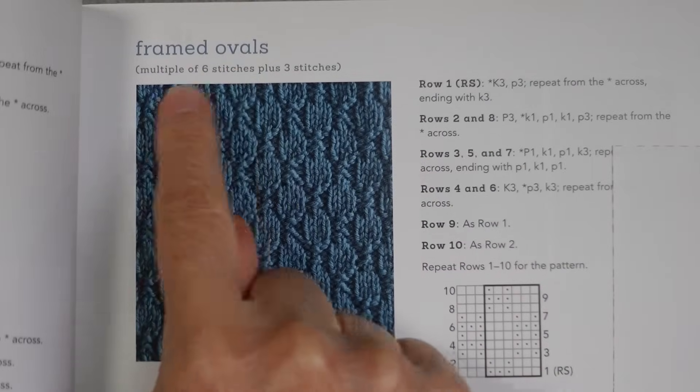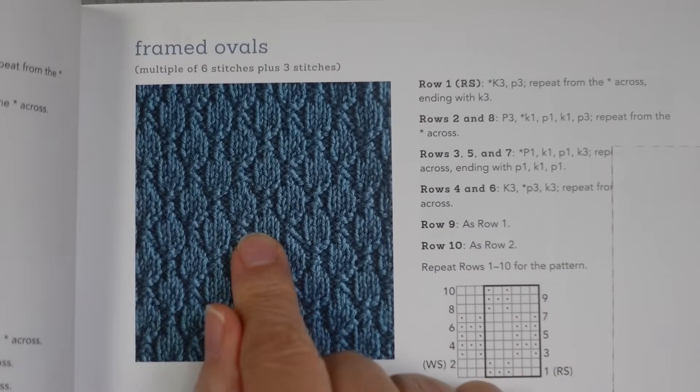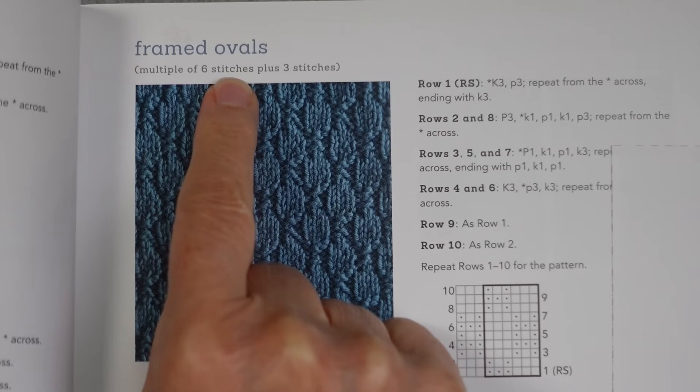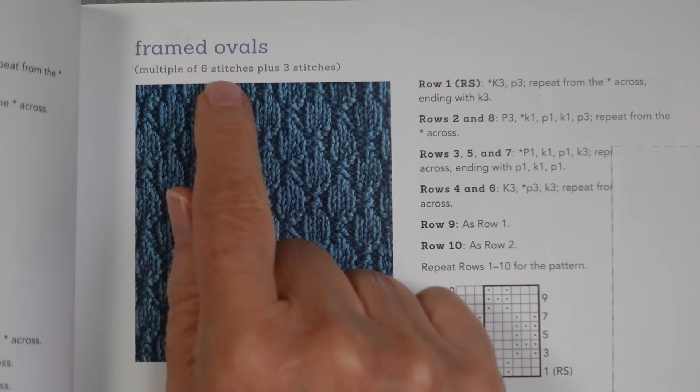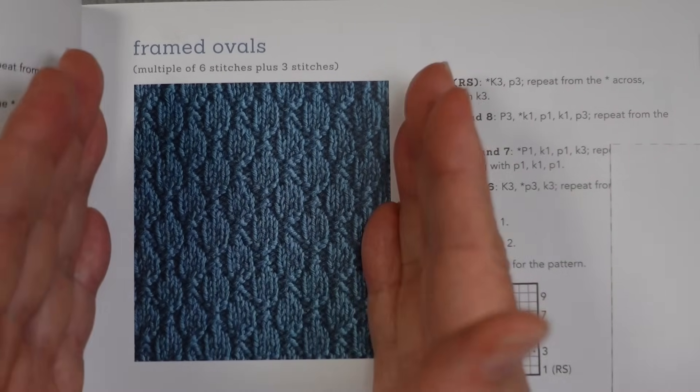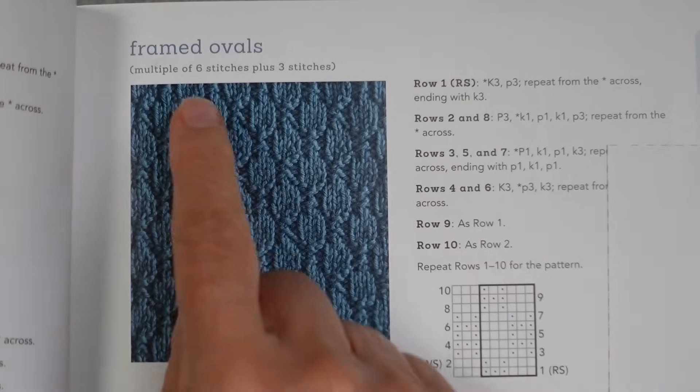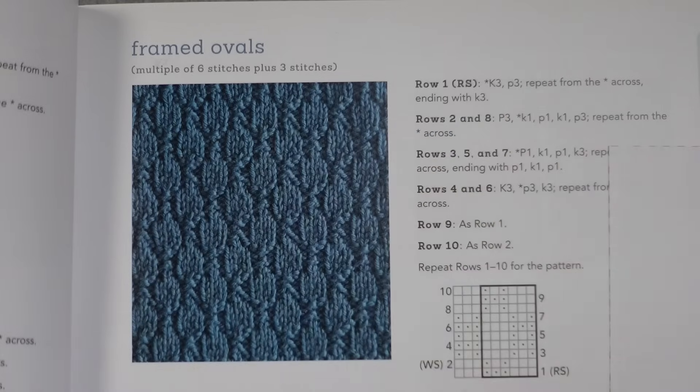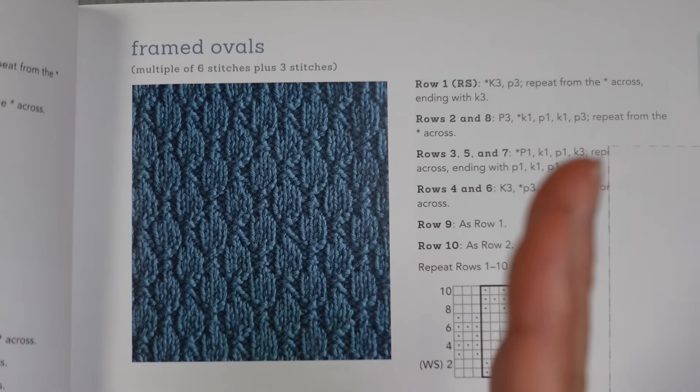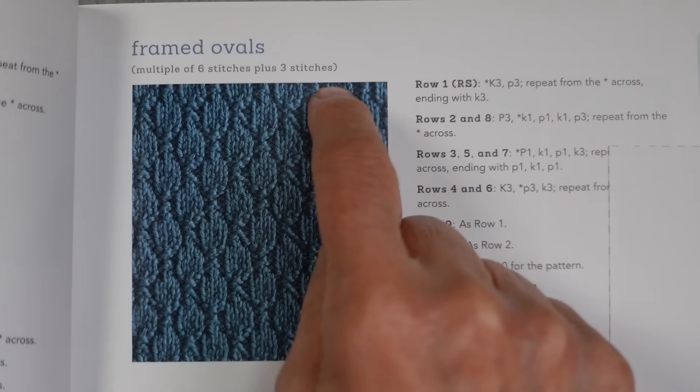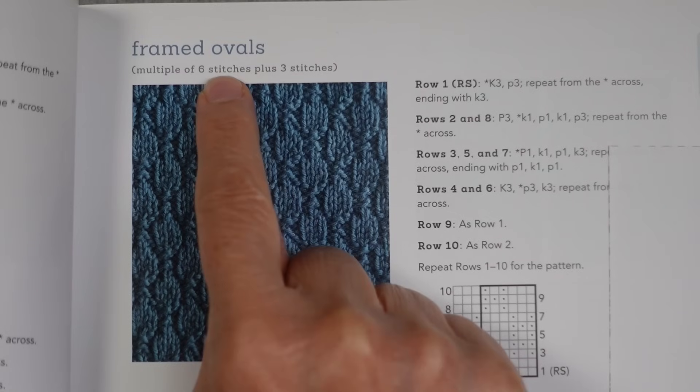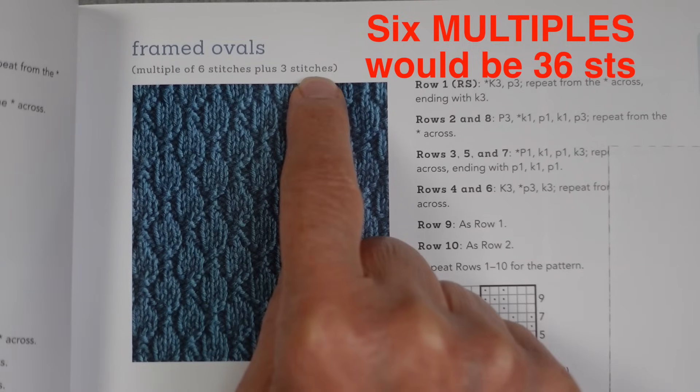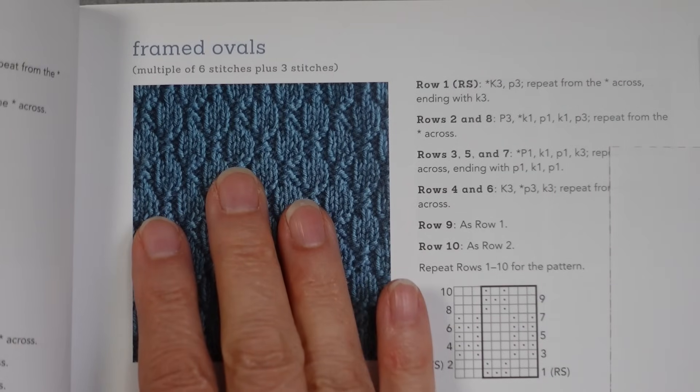So here is another stitch pattern that's called framed ovals. And in this case, it says that we need a multiple of six stitches plus three stitches. This means that in order to have the symmetry in this stitch pattern you can use any multiple of six stitches. So 6, 12, 18, whatever, 36, 60, anything you want. But whatever that number is, you're going to add three stitches to it. If you were going to use a multiple of six stitches, that would be 36 stitches. And then you'd add three and that would be 39. That is when you are knitting flat.